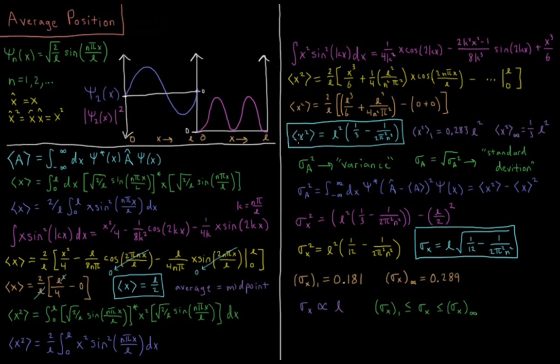The punchline of this is I can end up factoring this down into the final expression. The average value of x squared is l squared, the length of the box squared, times 1 third minus 1 over 2 pi squared n squared. So n is in a denominator here. At n equals infinity, this denominator gets very large, it goes away. So at n equals infinity, the average value of x squared is one third l squared. If I substitute n equals 1 here, I get 0.283 l squared, whereas this would be 0.333 l squared.